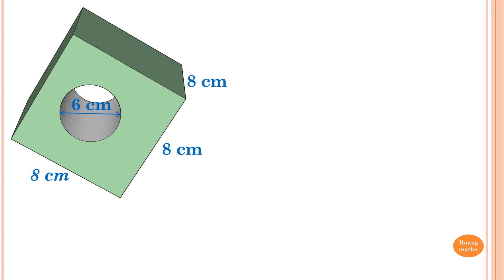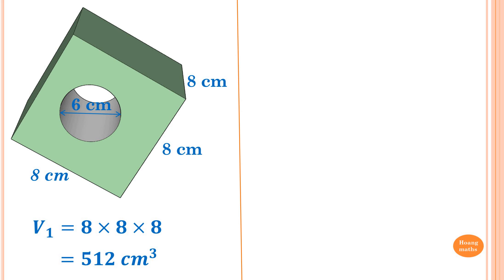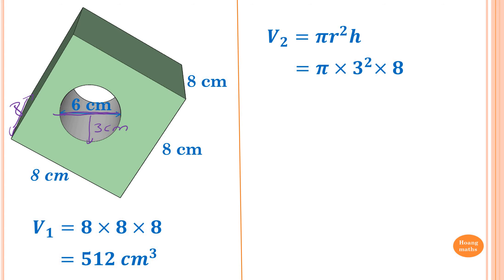Volume 1, the cube, is 8 times 8 times 8, which gives me 512 cubic centimeters. Volume 2, the cylinder, is pi r squared h. The diameter is 6 centimeters, so the radius is 3 centimeters, and the height is 8 centimeters. So it is pi times 3 squared times 8, giving 226.195 cubic centimeters.